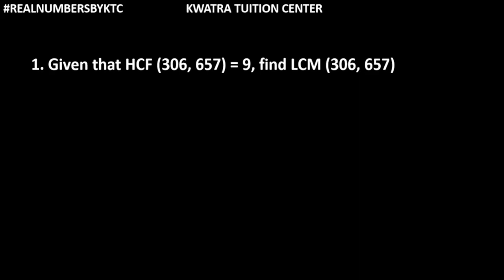So we have first question as given that HCF(306, 657), two numbers are given and their HCF is 9. We have to find the LCM. So we know one formula related to this which is HCF into LCM is equal to product of two numbers.